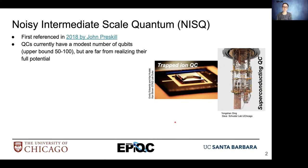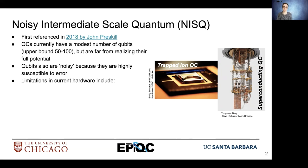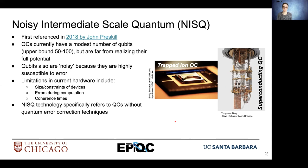These devices have been able to demonstrate some useful things, but they're far from demonstrating their full potential. The term NISQ also references the fact that qubits are currently noisy because they're highly susceptible to error. Limitations in current hardware include size and constraints of the devices, errors that exist and can come into the computation, coherence times of the qubits, and that's just to name a few. NISQ specifically refers to quantum technology that does not include error correction techniques.